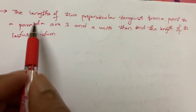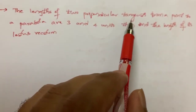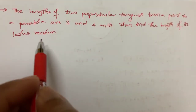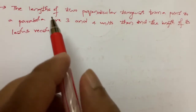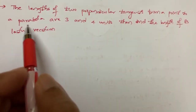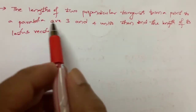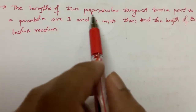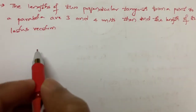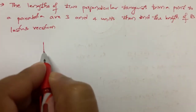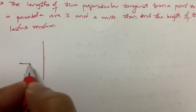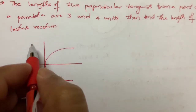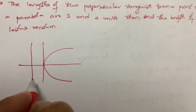Let's look at this problem. The lengths of two perpendicular tangents from a point to a parabola are 3 and 4 units. Find the length of its latus rectum. The two perpendicular tangents drawn from a point to a parabola means the point is lying on the directrix, because perpendicular tangents to a parabola will intersect on the directrix. And those two points will pass through the focus — that is the property of a parabola.